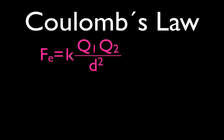The charges and the distance will usually be given, and K you may need to remember. K equals 9 times 10 to the 9th — it's actually about 8.99, but we usually just round it. It's important to remember its units: Newtons for force, meters squared for distance, and coulombs squared for charge. The Q stands for charge, and C — the coulomb — is the unit for charge, named after Charles Coulomb.